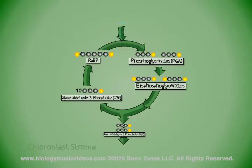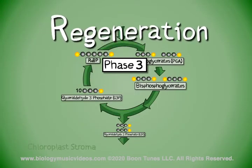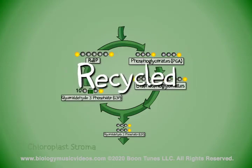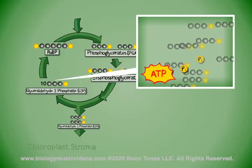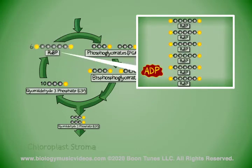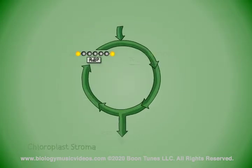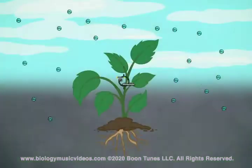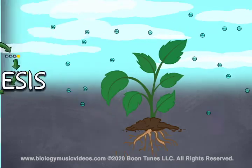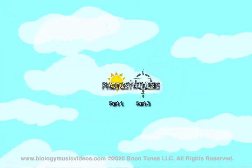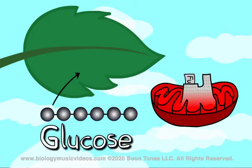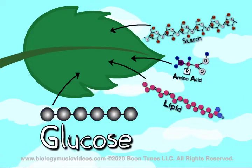Now let's take a look at phase 3: the regeneration of RUBP. The 10 molecules of G3P are recycled enzymatically — they're rearranged and phosphorylated, and RUBP is regenerated. We're back to where we started, and the cycle's ready for another run. More G3P will be synthesized when the plant takes in CO2. Photosynthesis parts 1 and 2 help make G3P, which allows plants to make glucose — their major fuel — and other organic molecules.